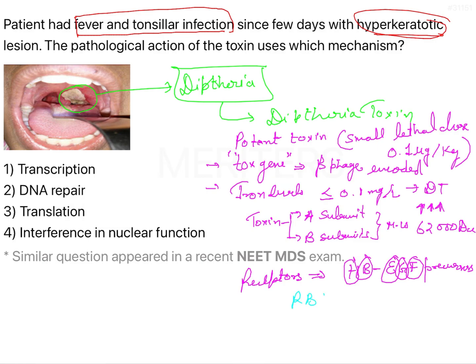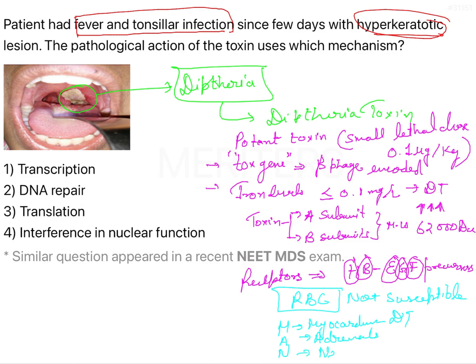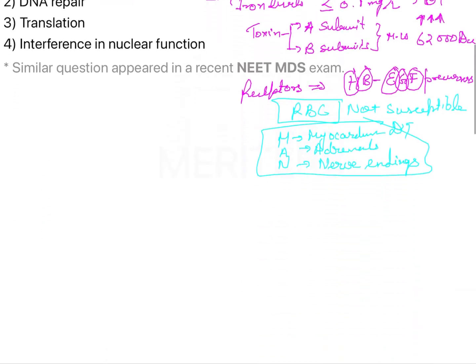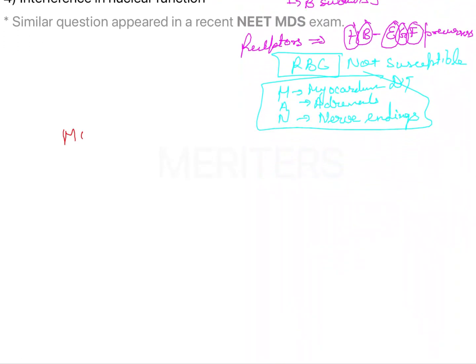All cells are susceptible to the action of diphtheria toxin except RBCs — which is very important for exams. The toxin has highest affinity for MAN: M for myocardium, A for adrenals, and N for nerve endings.